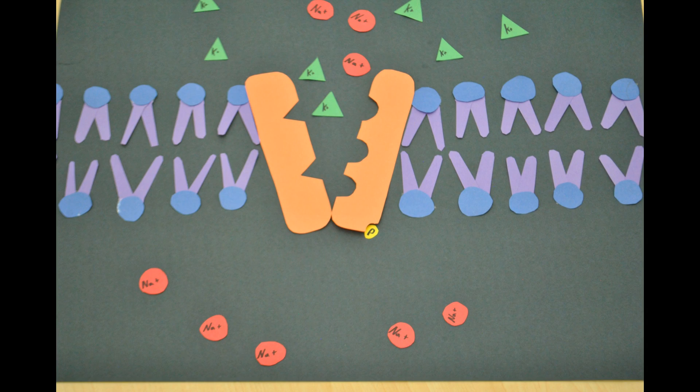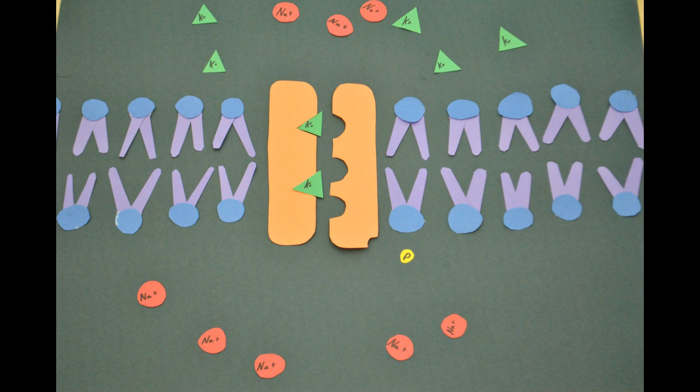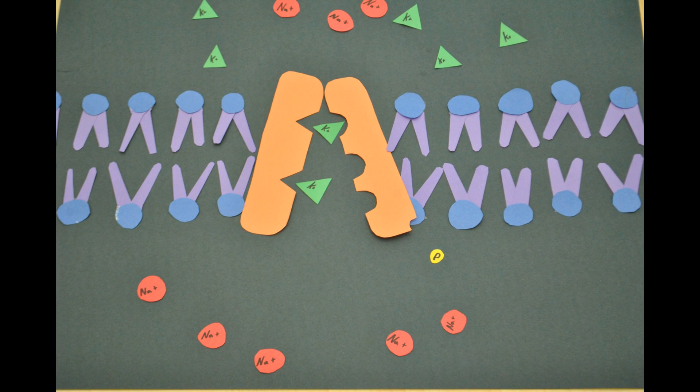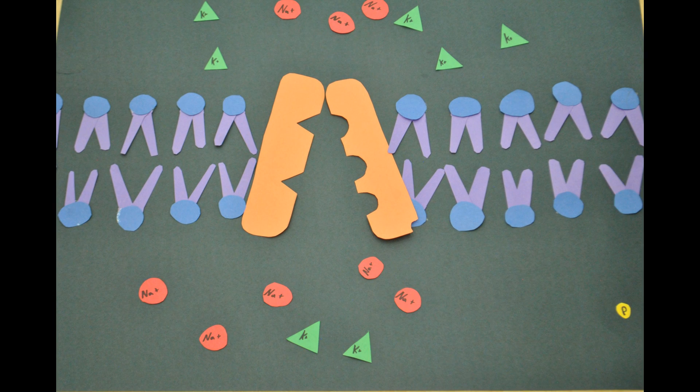Immediately after, two potassium ions enter this protein and bond to it. The phosphate detaches, causing the protein to reverse back to its original shape. The potassium ions are released into the cell and the cycle repeats as new sodium ions attach to the protein.